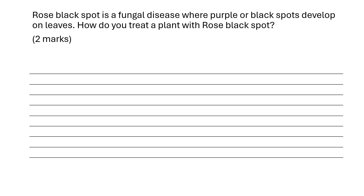It's worth two marks, so there are two methods we need to talk about. First, we need to remove the leaves and then destroy them. The second method is to spray with a fungicide.